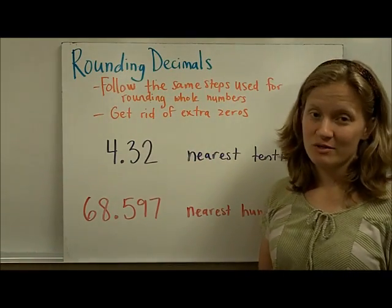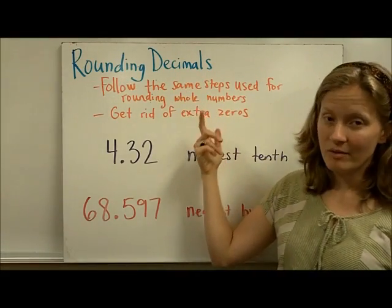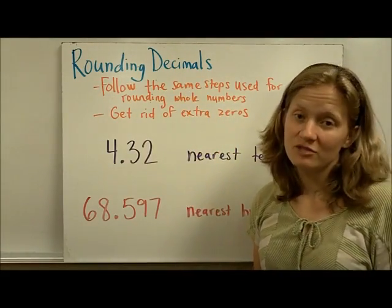Rounding decimals. When we are going to round decimals, we're going to follow the same steps used for rounding whole numbers. The only difference is that we're going to get rid of extra zeros.